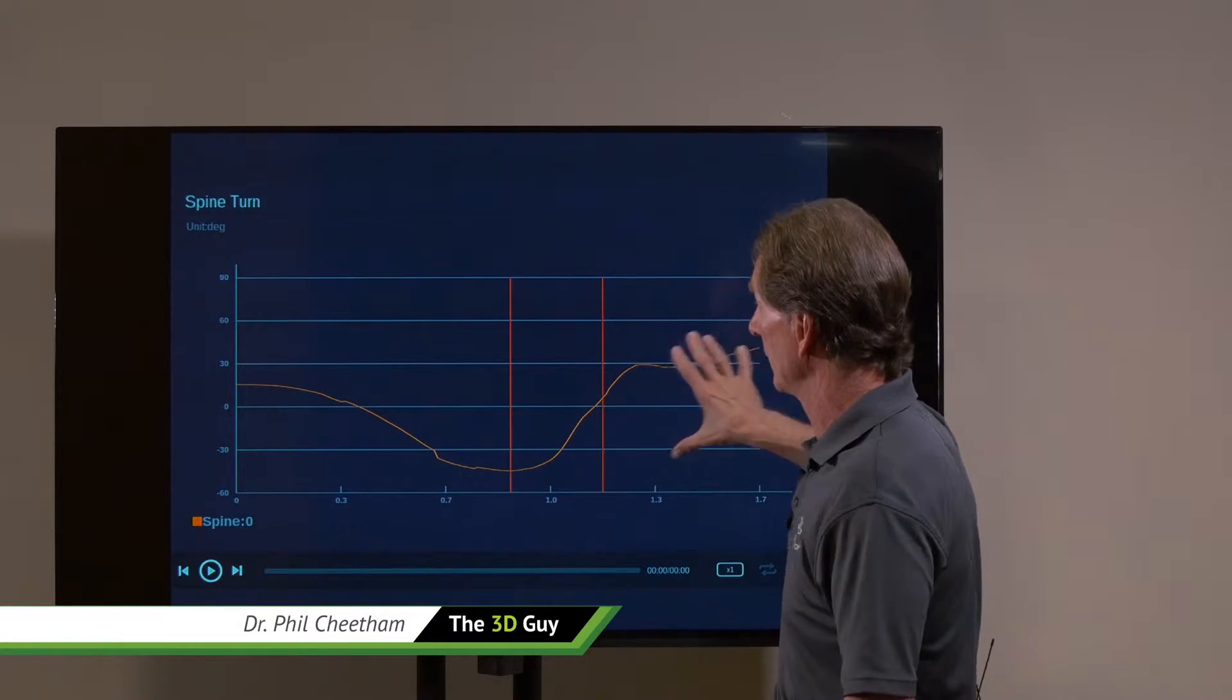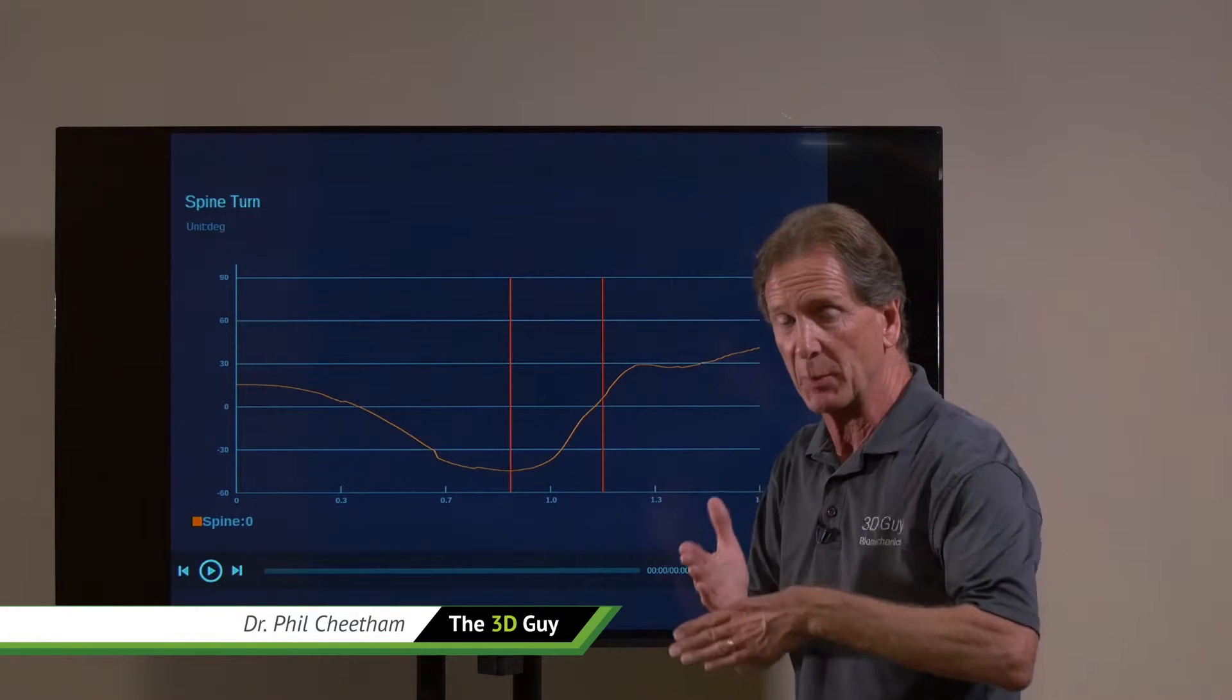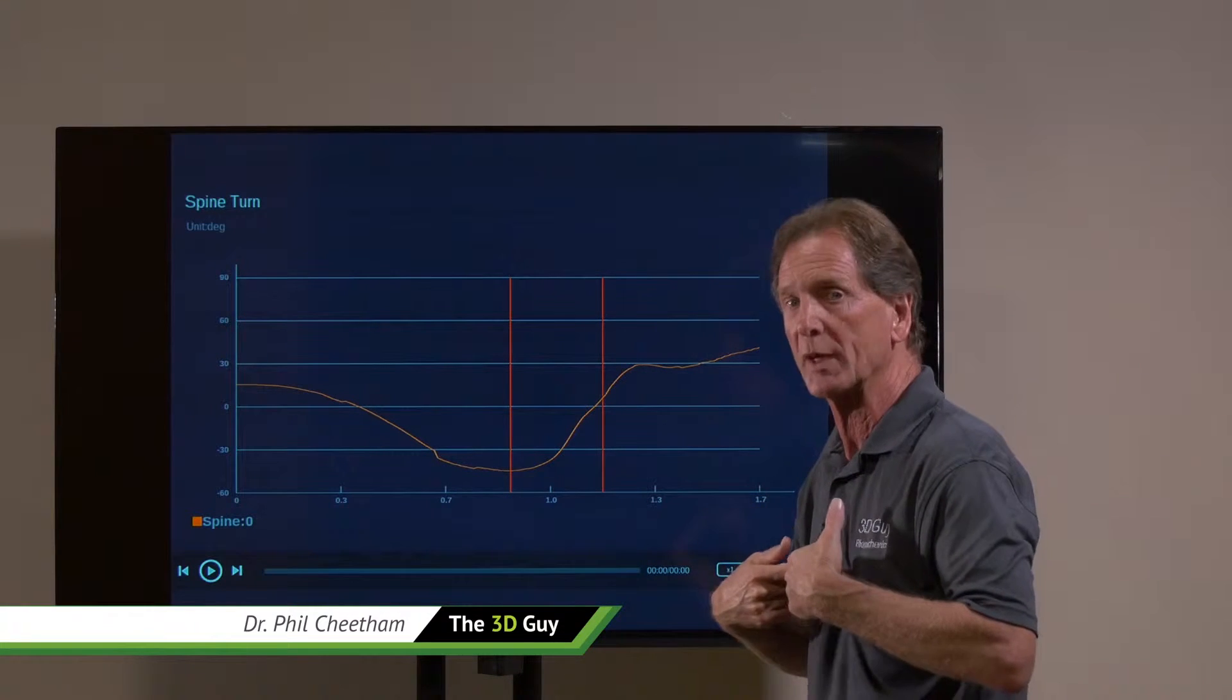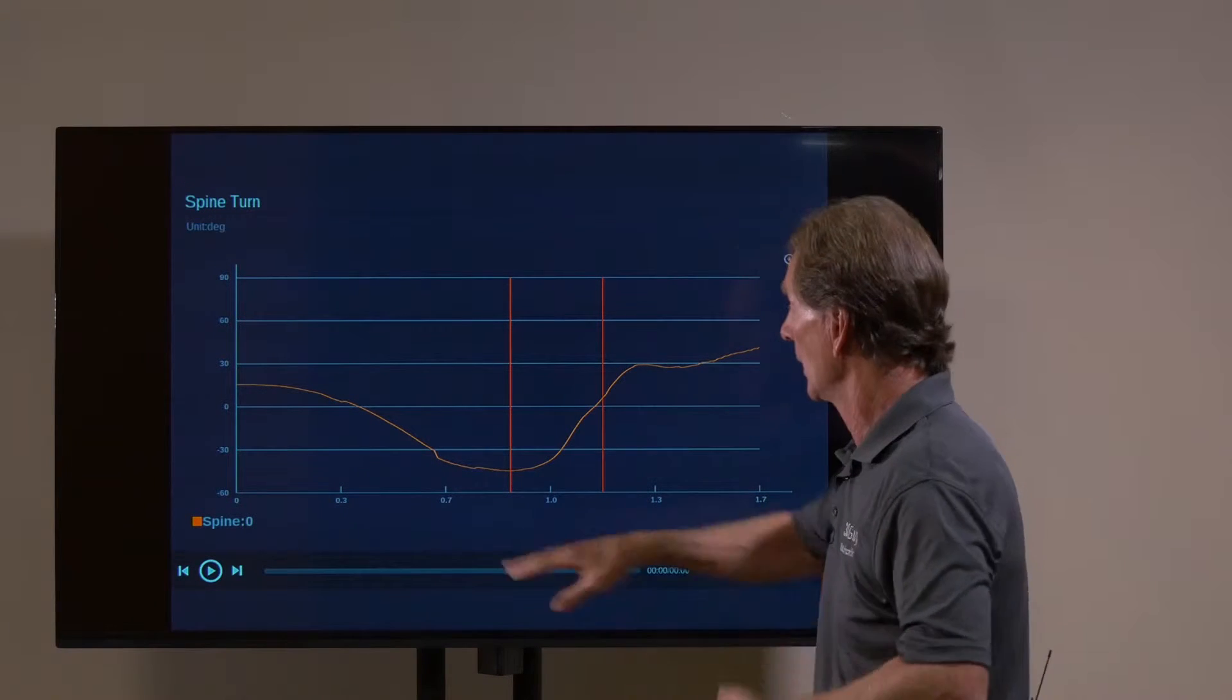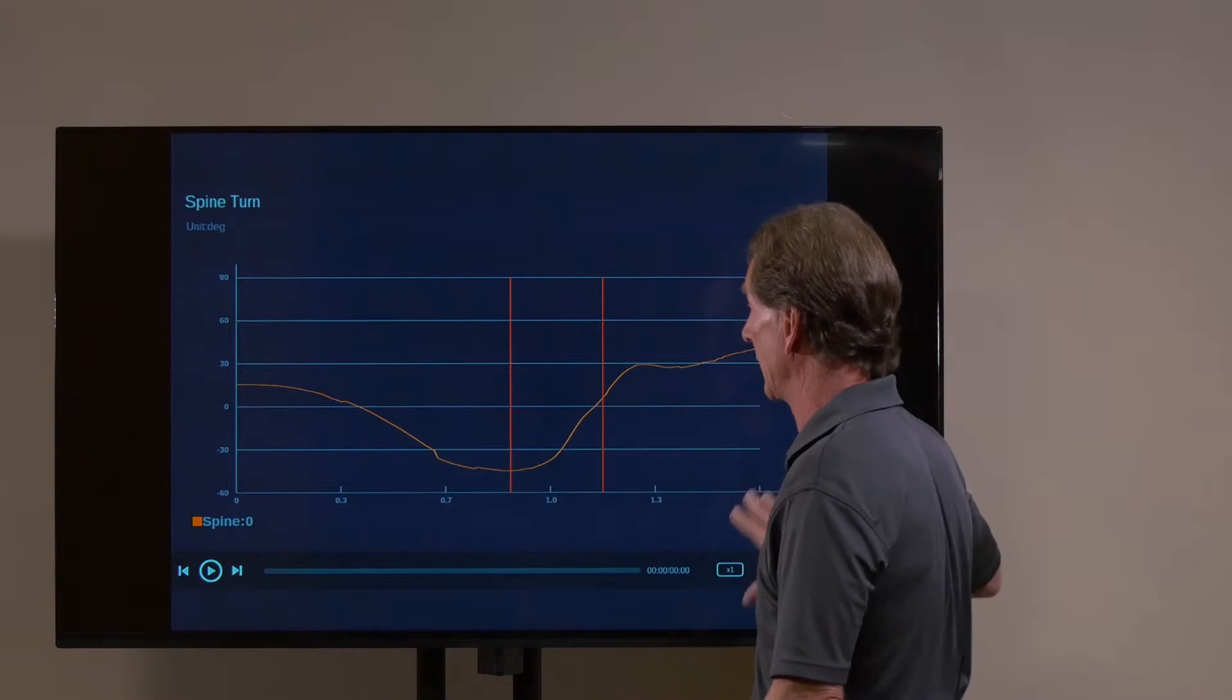So just to quickly explain the graph first. On the vertical axis we have the amount of separation or coil between the pelvis and the ribcage. We call it spine turn. Along the horizontal axis we have time in seconds throughout the swing.